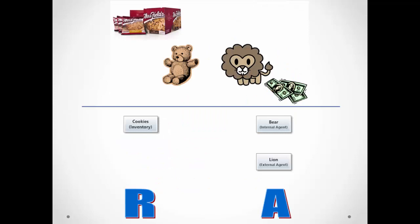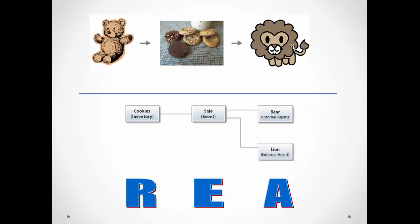In this example, the cookies were a resource. The bear and the lion were agents — specifically, the bear was an internal agent and the lion was an external agent. When the bear sold the cookies to the lion, we have the cookies resource (the inventory), the sale event, the bear as the internal agent participating in the sale, and the lion as the external agent participating in the sale.